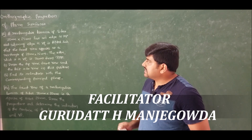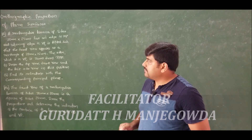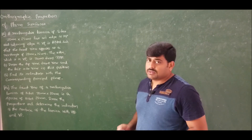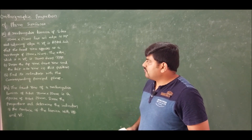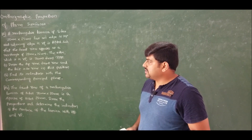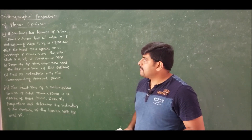The lamina is tilted such that the front view appears as a rectangle of 20 mm × 15 mm. The edge which is in VP is 30 mm from the right profile plane. Draw the top view, front view, and left side view in this position, and find its inclinations with the corresponding principal planes.